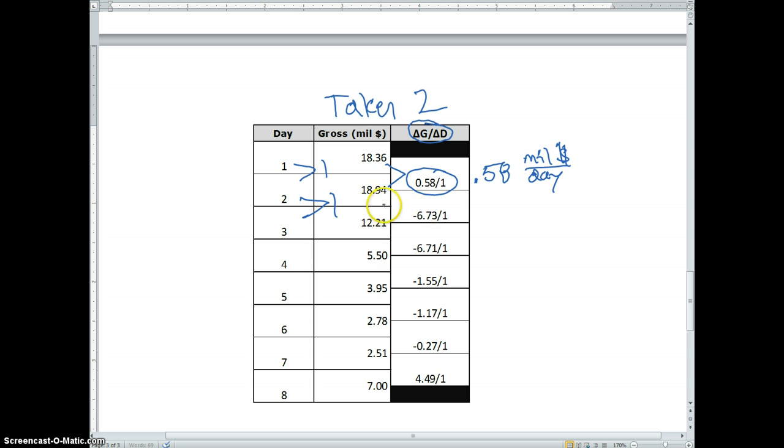From day two to day three, there was actually a drop. Maybe it was after the weekend, and so now it went from 18.94 down to 12.21, which represents a drop of $6.73 million dollars over the course of one day. And if we repeated that for all these values, we would get the corresponding numbers here, and they're all over one because our days are in sequences of one.